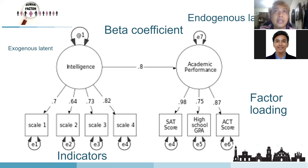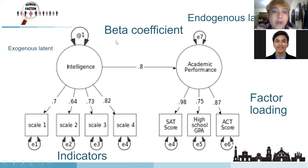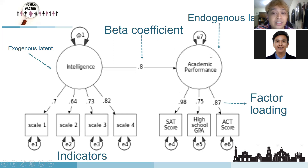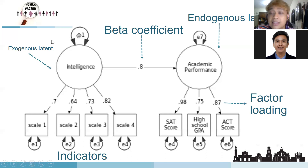Some students actually try to utilize SEM for their master's thesis. In structural equation modeling, you can see circles and squares. The circle we call a latent variable — something you don't measure directly. The square is the observed variable, also called an indicator.